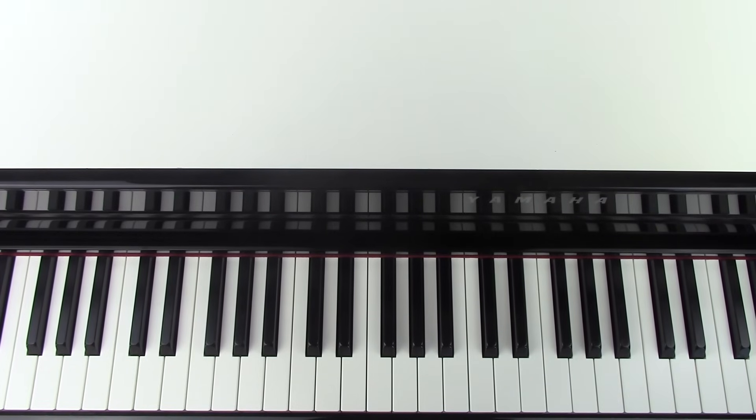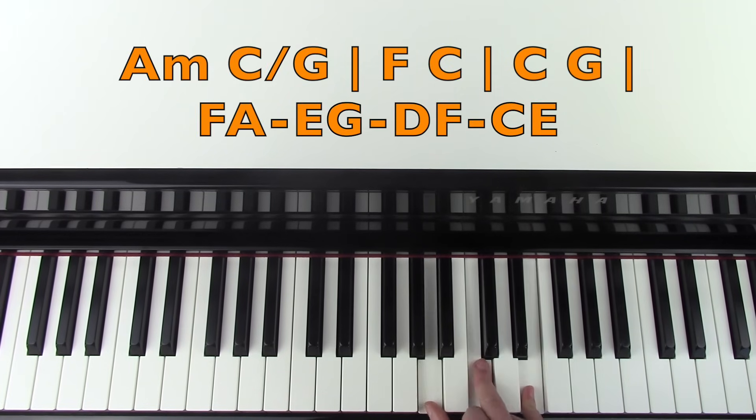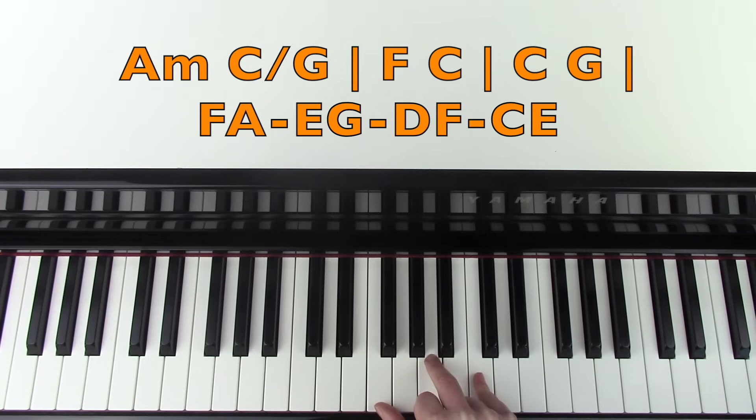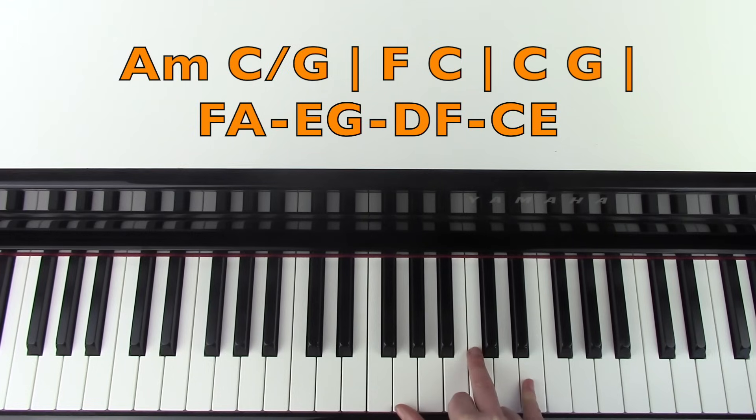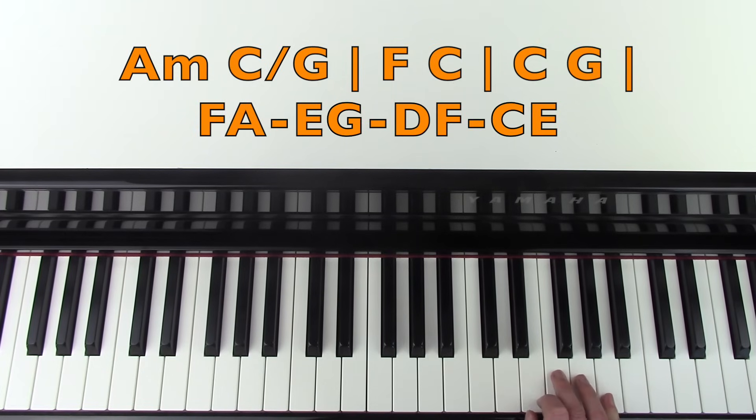Now we're going to look at the chorus. The first chord is an A minor, you're going to play that twice. Then a C major inversion again, so just move your thumb to G and play that twice. Then an F major chord twice, which is F, A and C. Then back to C major twice. C major again twice. Then G major. And then this part again.